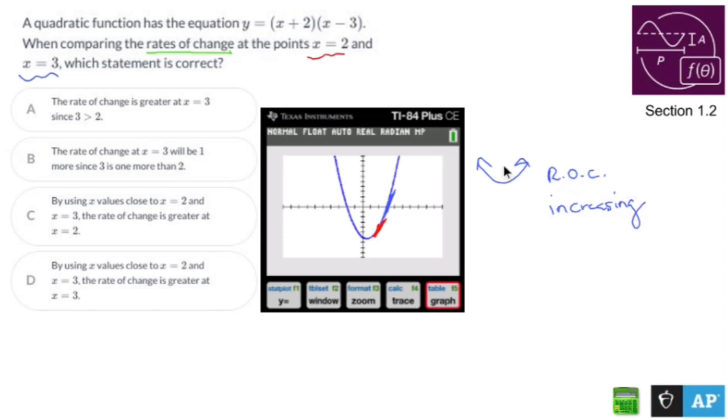So what I can say is the rate of change for 3 is greater than the rate of change for 2. The rate of change is greater at 3, since 3 is greater than 2. That's true in this case, but not necessarily true. So I'll put a question mark right there.